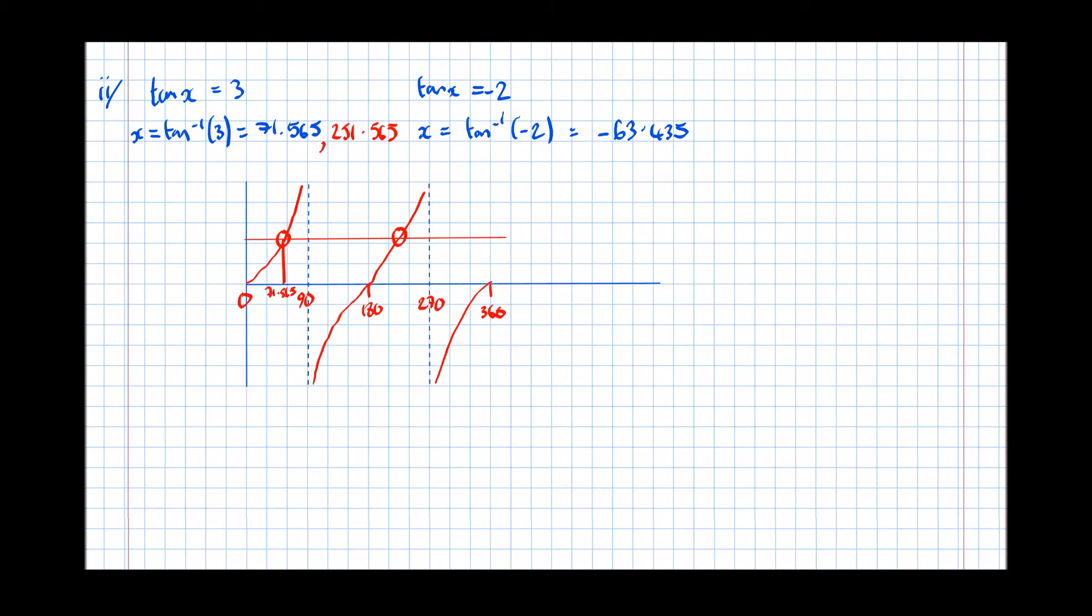The other one, minus 63.435. Well we want all the values that have a tan of minus 2. So I'm going to say that's roughly there. So there's one and there's one.